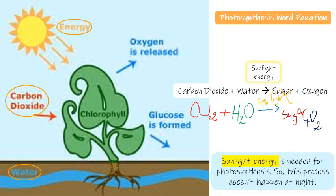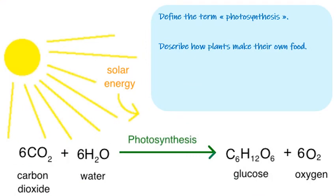Sunlight energy is needed for photosynthesis — this food-making process cannot happen if the energy needed isn't present. So this process does not happen at night; at night the plant doesn't take in carbon dioxide and stops the food-making process. Photosynthesis happens only in green plants since chlorophyll is needed to trap sunlight energy. Without chlorophyll, photosynthesis cannot happen, so non-green plants don't go through photosynthesis.